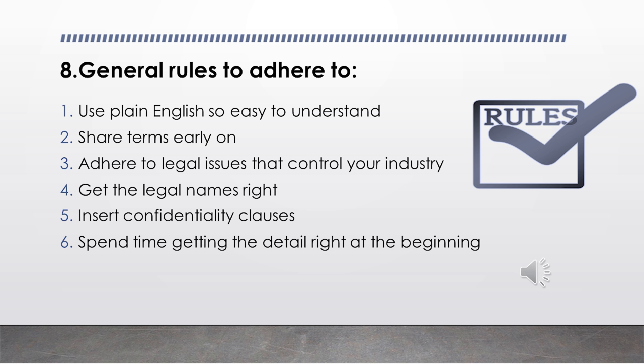The third point is to ensure you adhere to any legal issues that control your industry — be aware of what they are in advance and include them as part of the contract. The fourth area is to ensure you get the legal names and business trading names right and included in the contract — often you're just dealing with individuals and may not be aware of the correct legal trading name. The fifth and important point is to always insert confidentiality clauses — the know-how of your day-to-day activities keeps your business up and running, helps you stand out from competitors, and you want to ensure your business is safe from any potential breaches.